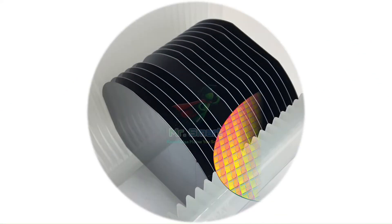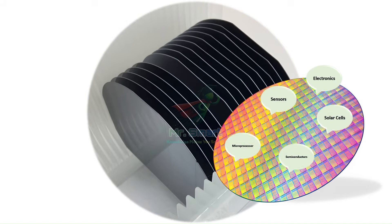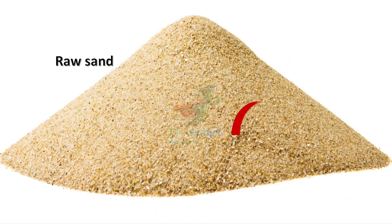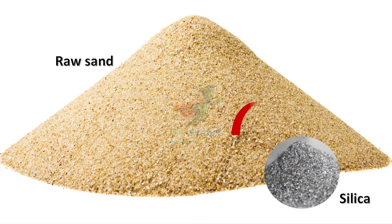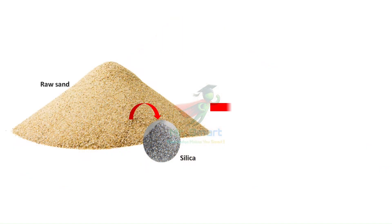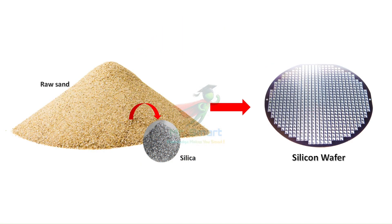Silicon wafers are ultra-thin slices of crystalline silicon. They're the foundation of semiconductors, the building blocks of electronic devices. Silicon, the second most abundant element on Earth, begins its journey as silica, found in sand. But not just any sand will do — the process requires ultra-pure silicon, free from impurities that can disrupt performance.